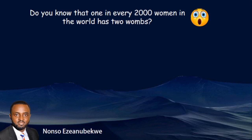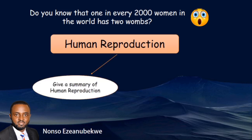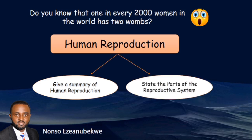I welcome you to my channel. In this video I'm going to be using beautiful illustrations to talk about human reproduction. At the end of this lesson you should be able to give a summary of what happens during human reproduction, and state the various parts of the male and female reproductive systems.